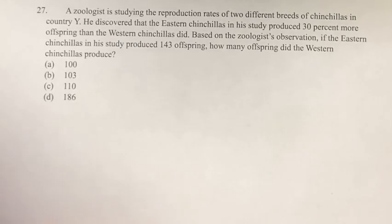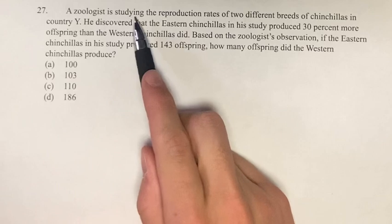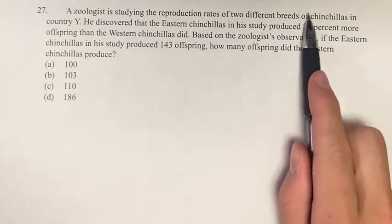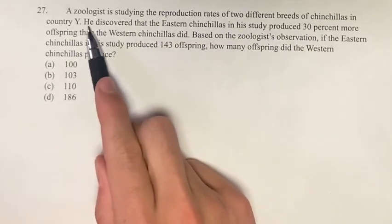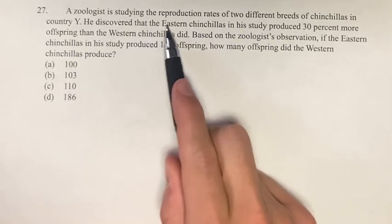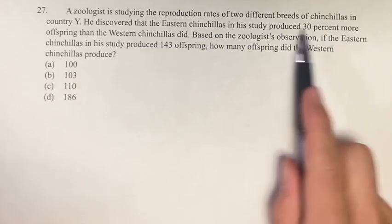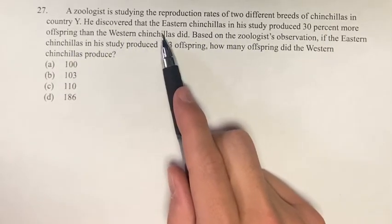Hello and welcome back to another video. In this problem, we're told a zoologist is studying the reproduction rates of two different breeds of chinchillas in country Y. He discovered that the eastern chinchillas in this study produced 30% more offspring than the western chinchillas did.